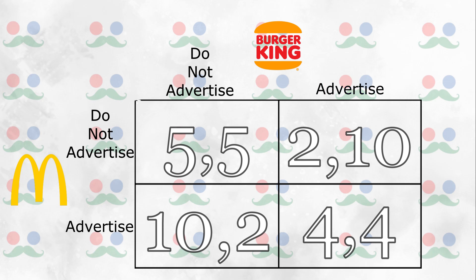The blocks where we have underlined both payoffs are called equilibria. Now let's expand this matrix by including a third option.